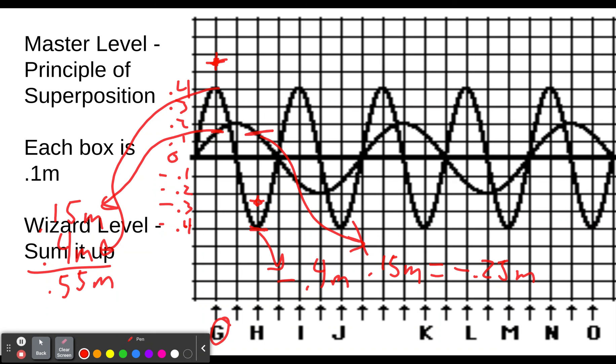Let's do one last example to make sure we've got the idea here. We'll take this at M. We've got a negative 0.4 meters, and I'm estimating these by the way, at negative 0.15. So we add those up and we get negative 0.55 meters. And if we were on the wizard level, we'd draw our little plus right down here at negative 0.55.